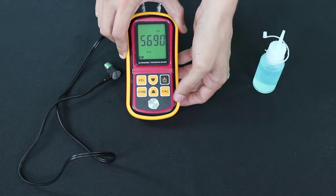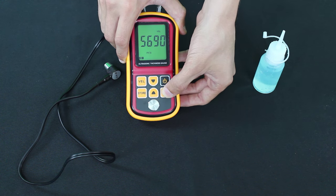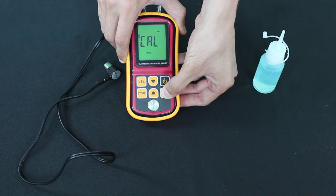Next thing is to calibrate it. You want to press the cal button which stands for calibration. You want to hold that down until the screen shows cal. There you go.